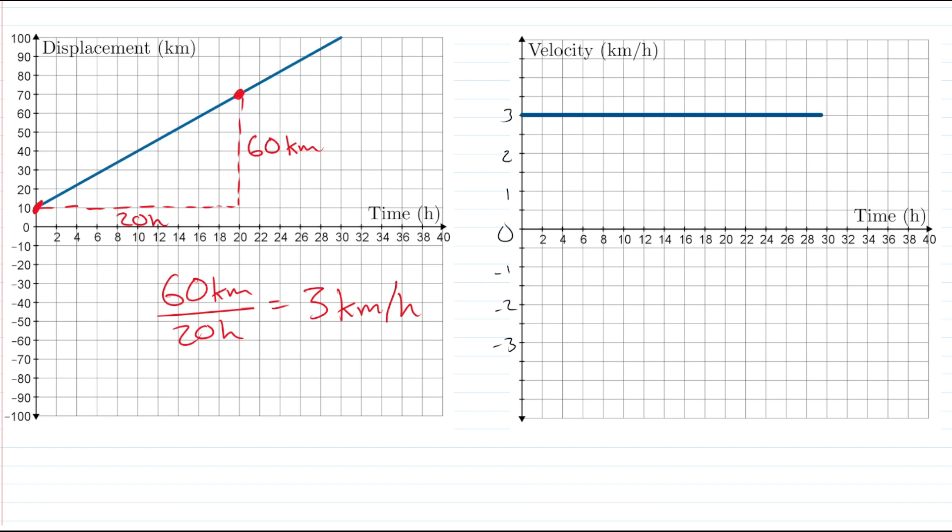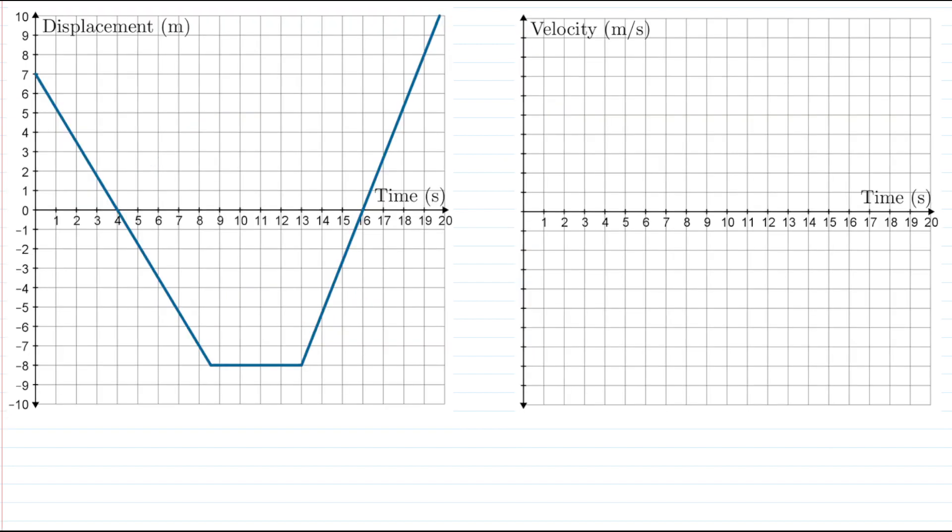Now let's take a look at one where we have a changing velocity. Notice in this graph, we have straight lines still, but we have some different slopes happening. We have three sections, which means our velocity graph is also going to have three sections to represent the three different rates of change in our displacement-time graph. We can calculate those rates of change just like we did in the previous question, we'll just find the slope of each segment.